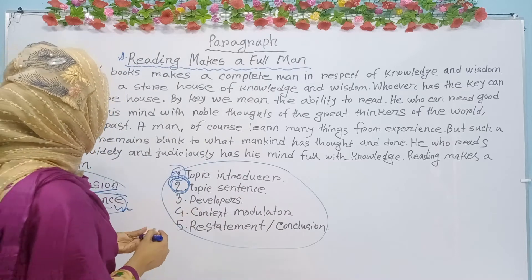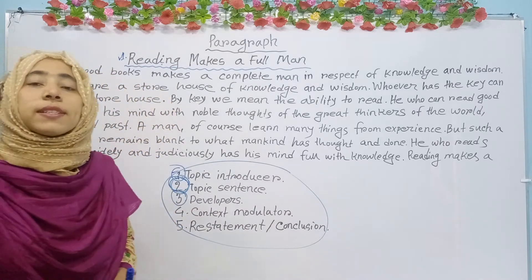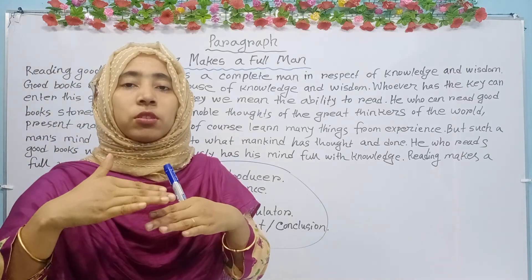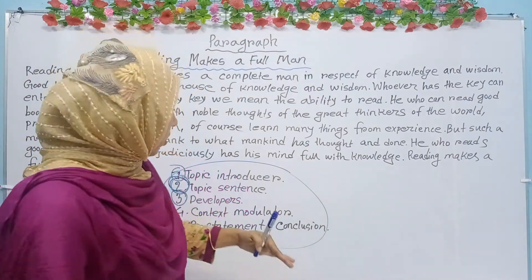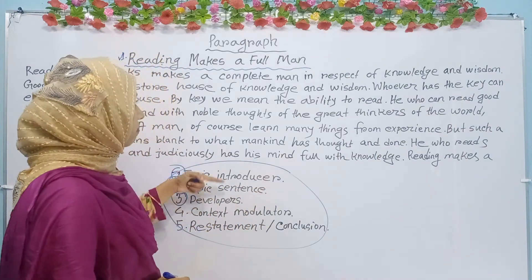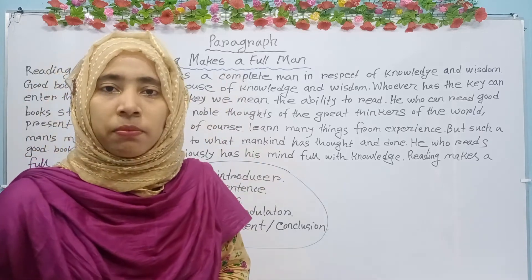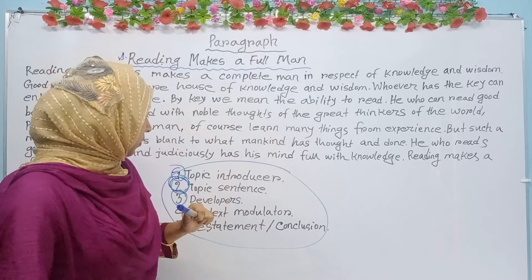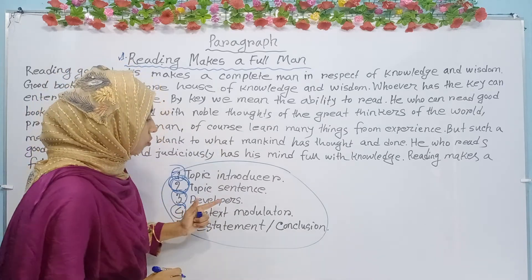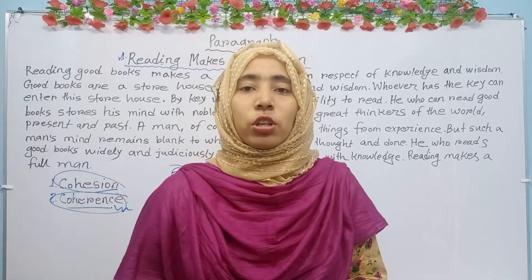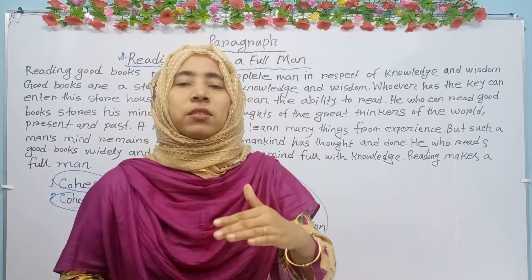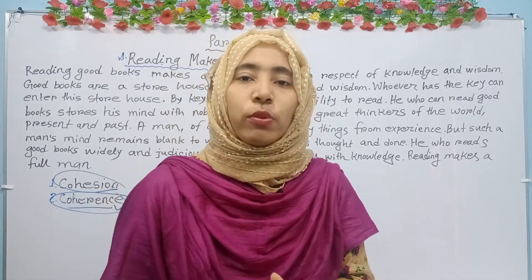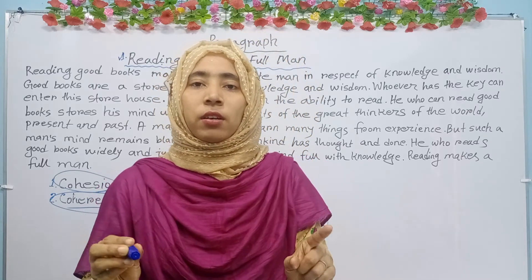Then you see here: developers. What are developers? Developers are those sentences which maintain connection from one sentence to another sentence. All these developers help to make a complete paragraph, and all these developers will be based on the topic sentence. And then you see number four: context modulator. What is context modulator? Context modulator is the thing that maintains a link between two sentences or two ideas.